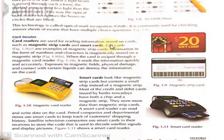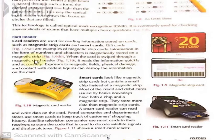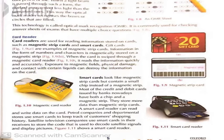Card readers are used for reading information stored on cards such as magnetic strip cards and smart cards, as you can see in this picture. Information in the form of numbers and characters is magnetically stored on a magnetic strip. When the card is swiped through a magnetic card reader, it reads information quickly and accurately. Exposure to magnetic fields, physical damage, and contact with certain liquids can destroy the information on the card.